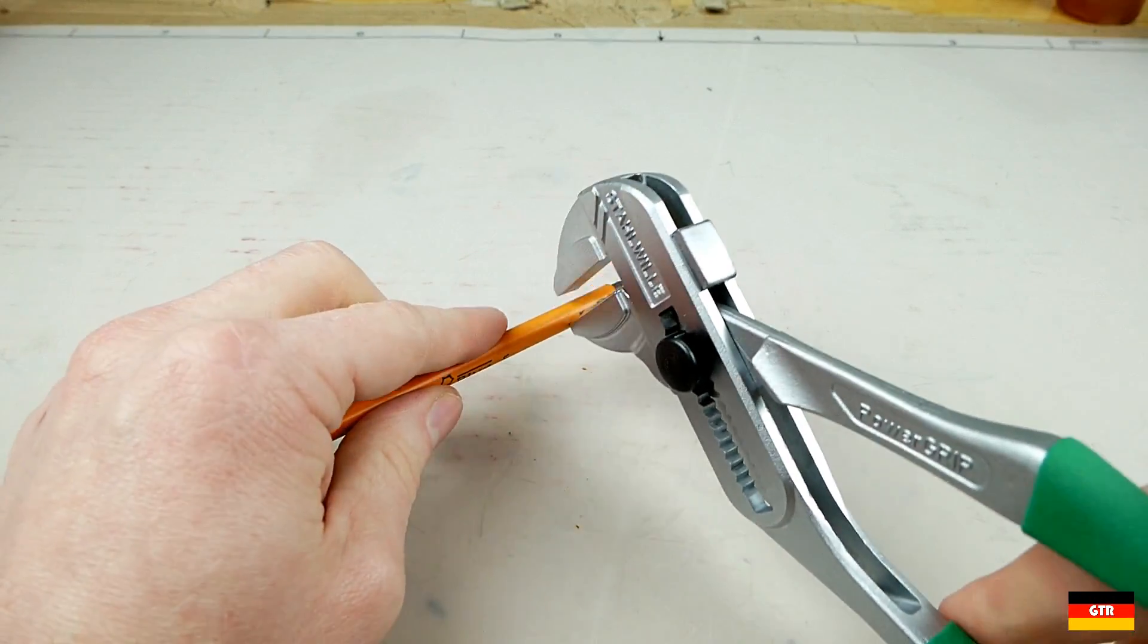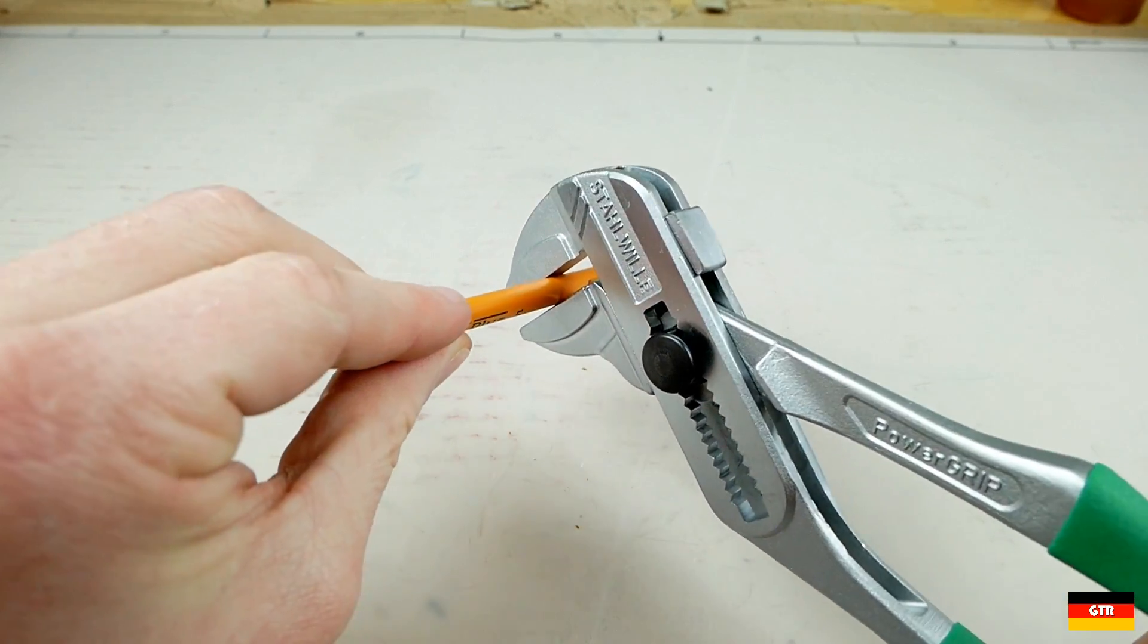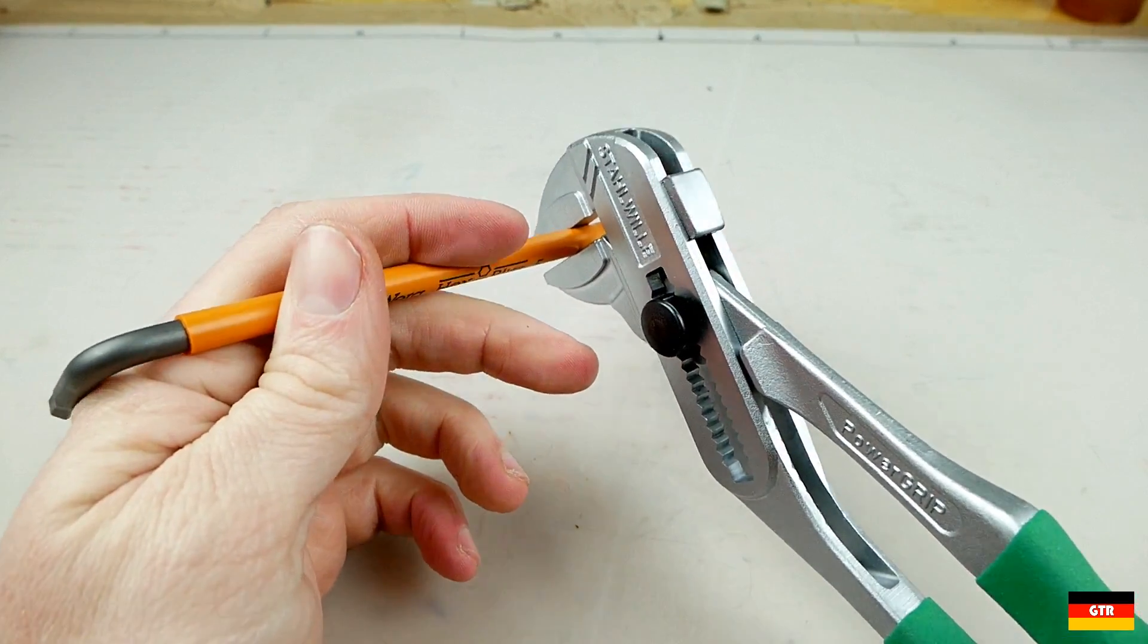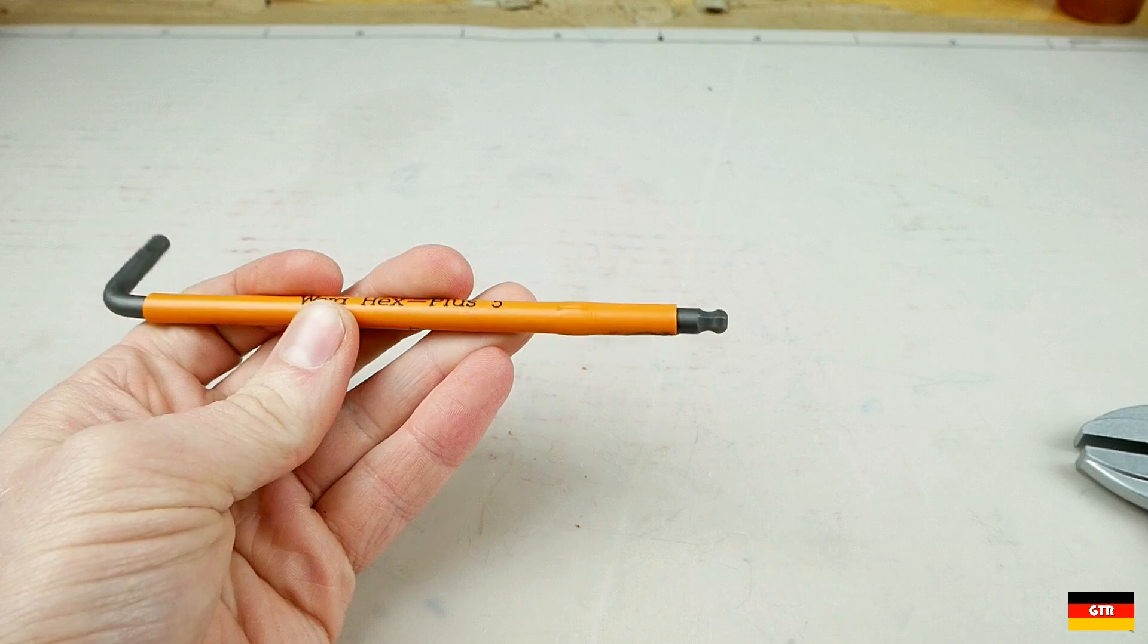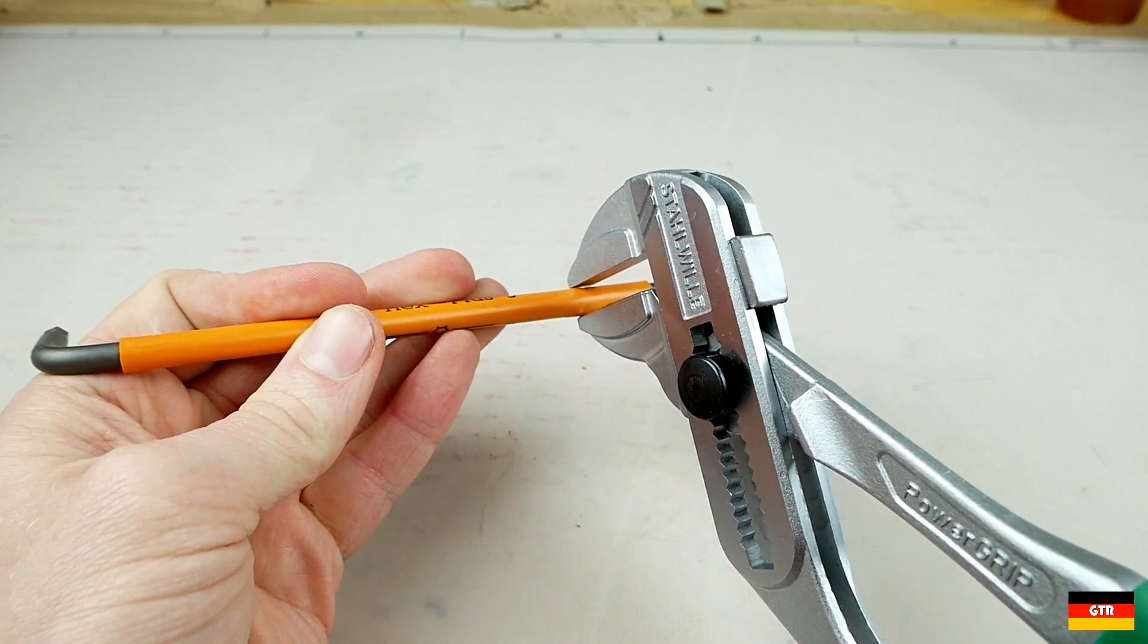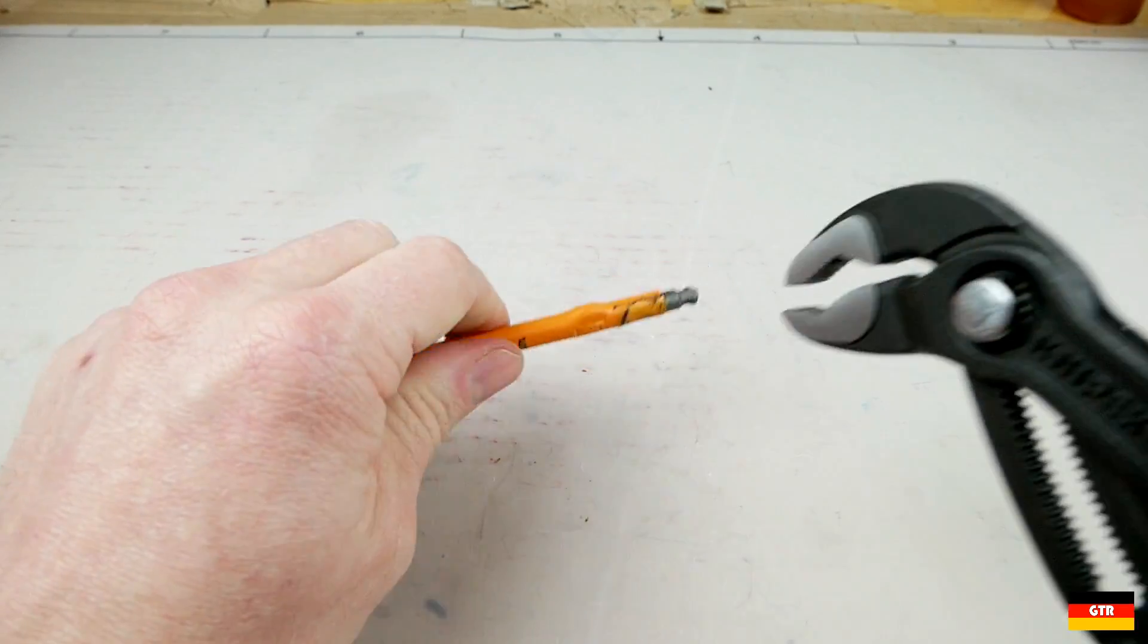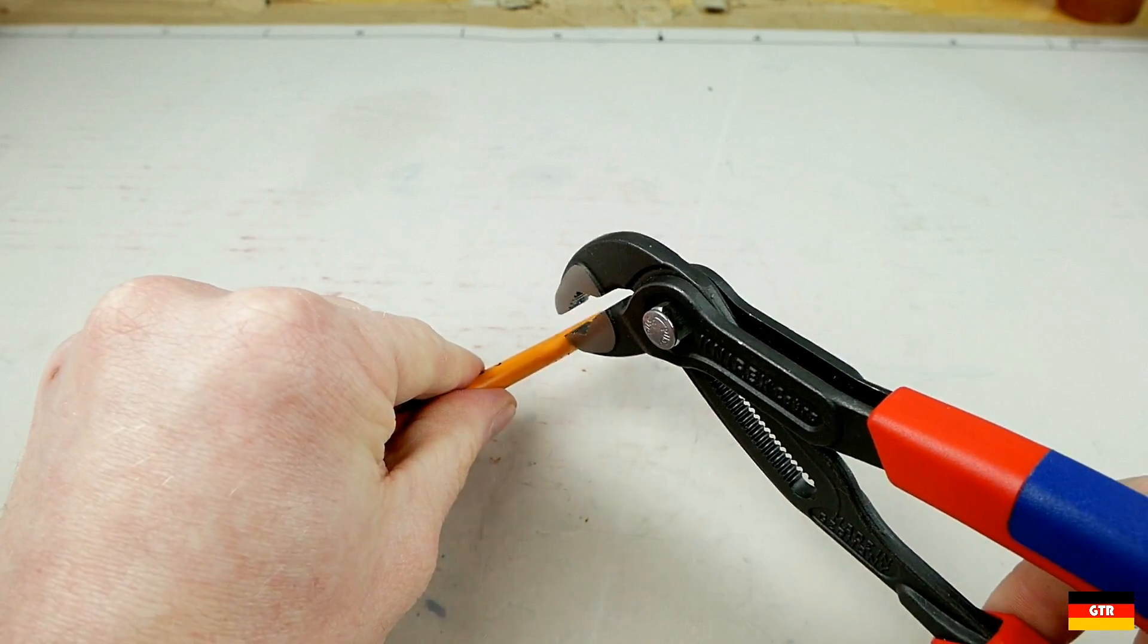So next I'll see how crush resistant this material is. So we'll just use these Knipex pliers wrenches and get a lot of force on there. So you can definitely leave some dents in there but it's not like becoming brittle or anything like that.